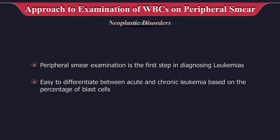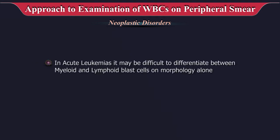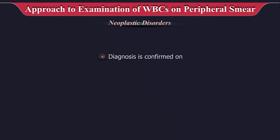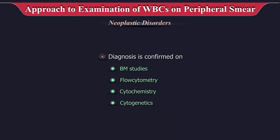It is reasonably easy to differentiate between acute and chronic leukemia based on the percentage of blast cells. However, in acute leukemias it may be difficult to differentiate between myeloid and lymphoid blast cells on morphology alone. In such cases, it is adequate to report the case as an acute leukemia requiring further workup. The diagnosis is confirmed on bone marrow studies, flow cytometry, cytochemistry, and cytogenetics.